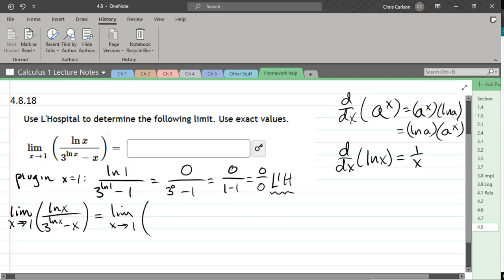And then we're going to take the derivative of the numerator and denominator. The derivative of the numerator is 1 over x. We wrote that down earlier. Now the denominator is a little bit strange.